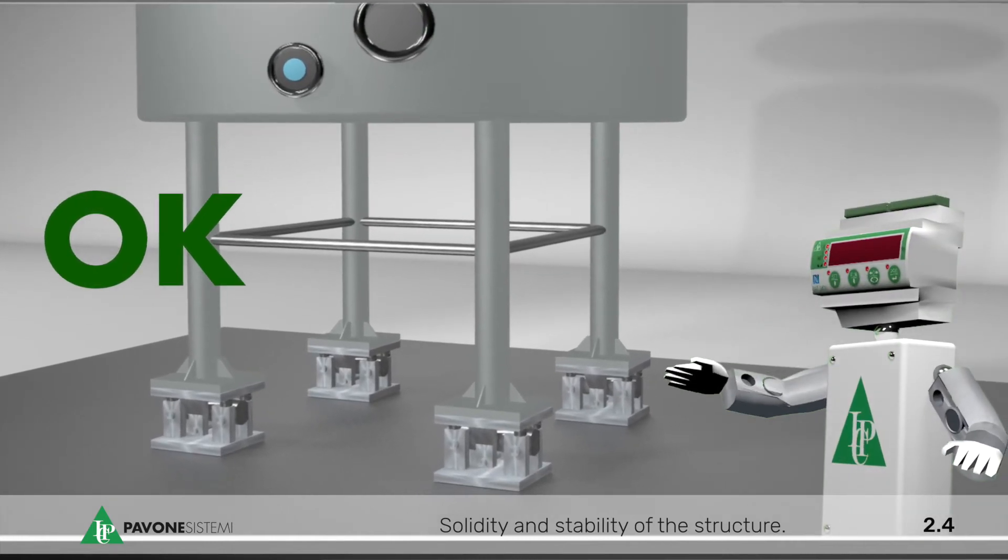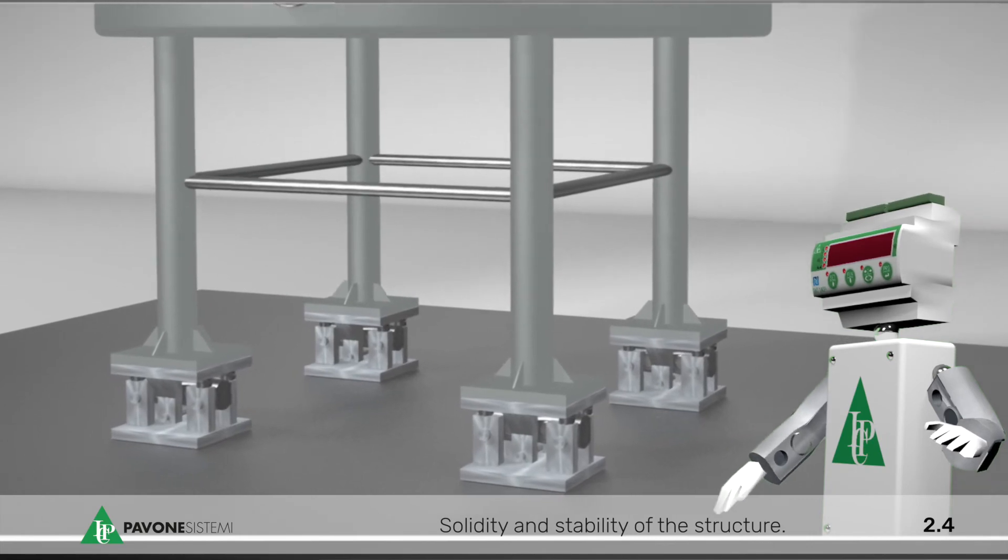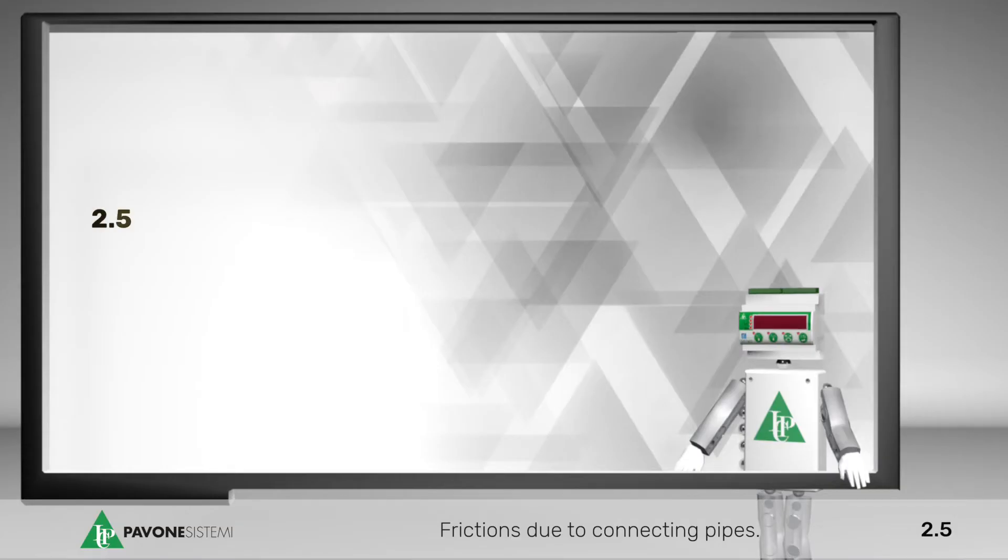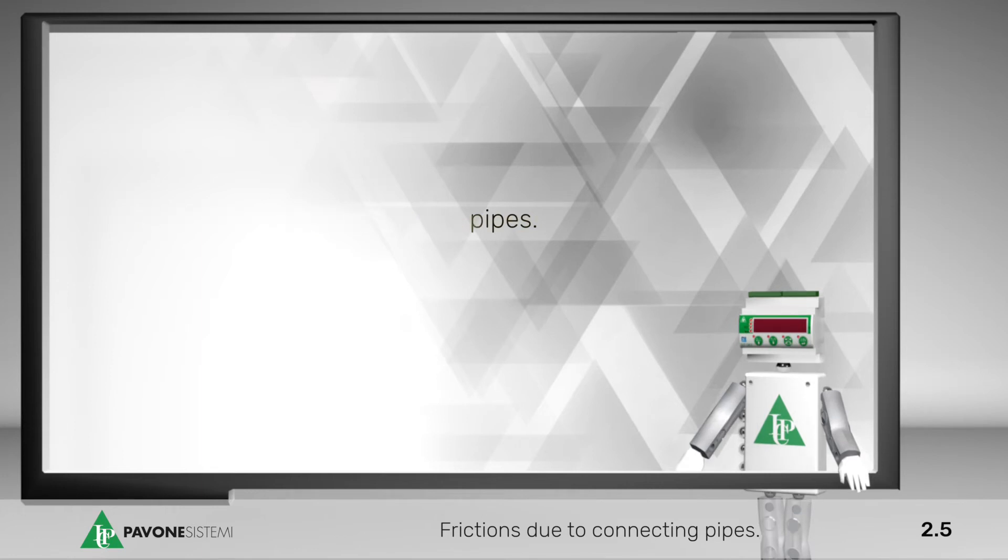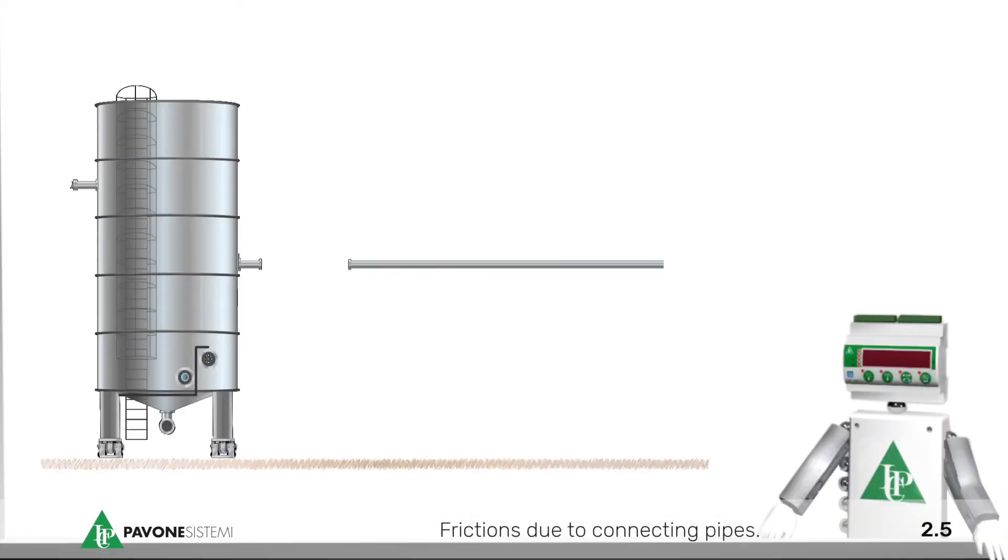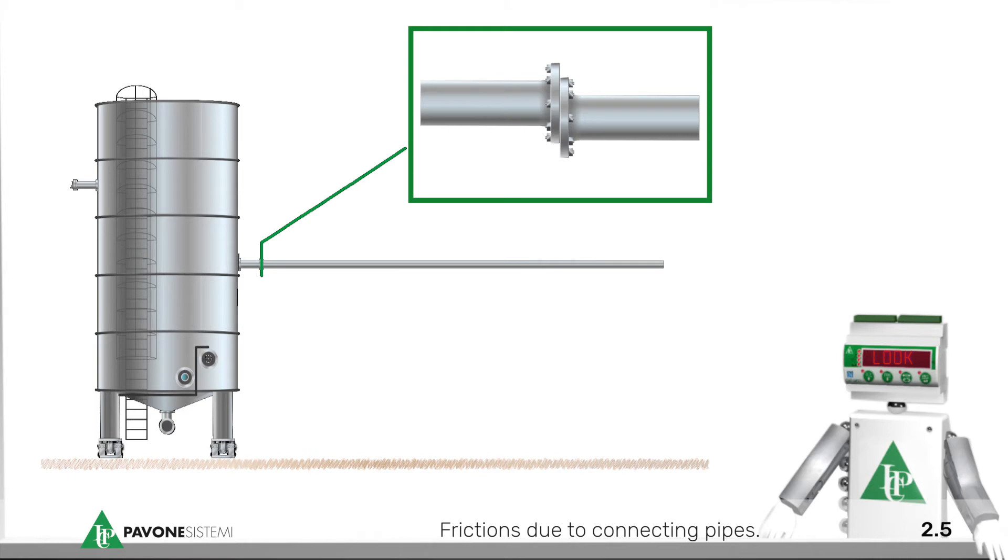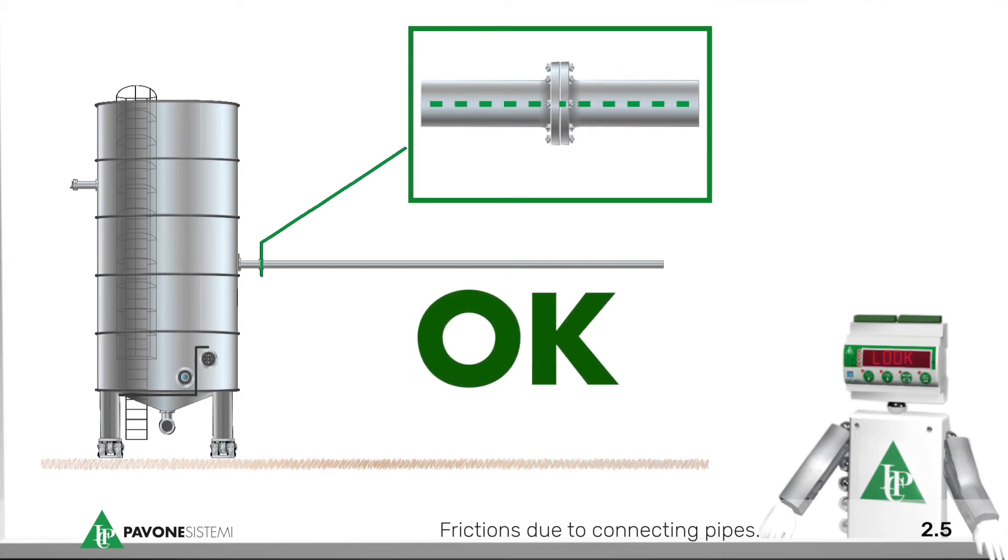Frictions due to connecting pipes. The more a weighing structure is free from friction, the more the weighing system is precise. When piping are present, make sure that the pipes that have to be anchored to the weighing structure are closed and aligned to the nozzle to which they will be clamped.